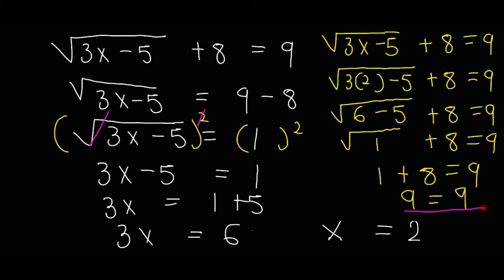We verify: substitute x equals 2 into the original equation. 3 times 2 minus 5 plus 8 equals 9. That gives root of 1 plus 8 equals 1 plus 8 equals 9. So 9 equals 9. Left-hand side equals right-hand side, therefore x equals 2 is our answer.